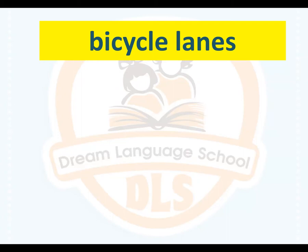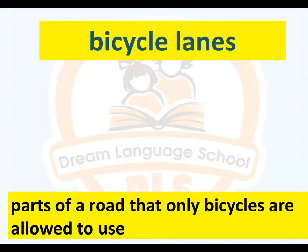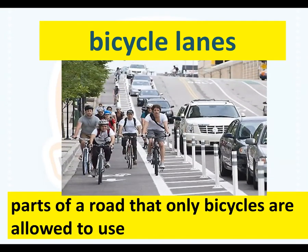Okay, bicycle lanes. What are bicycle lanes? They are parts of a road that only bicycles are allowed to use, like you see in the picture. Here we have two roads — one for cars and one for bicycles. The road that only bicycles are allowed to use is called a bicycle lane.